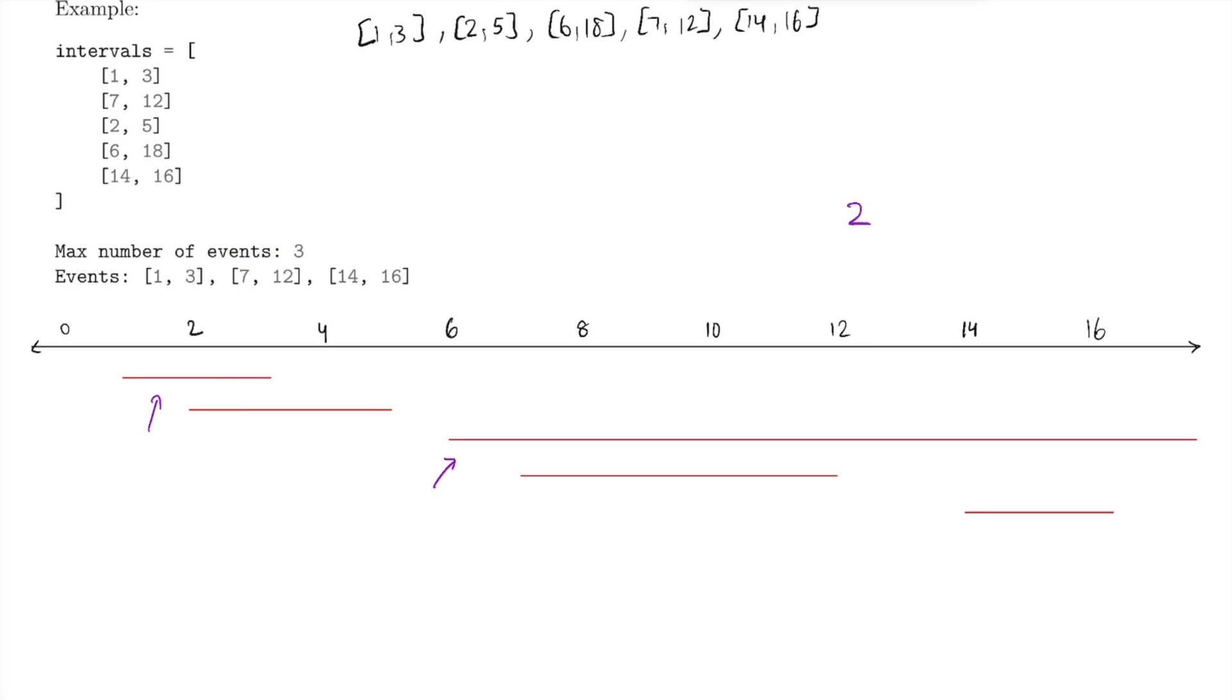Well, the place where this went wrong was that we sorted by start times, so we could start earlier than another time, but we could potentially end way farther than we really need to. For instance, this interval from 6 to 18 takes up so much time that we could have actually spent doing more other events.